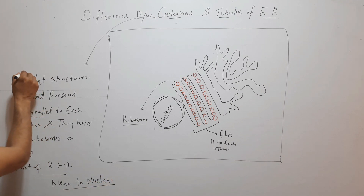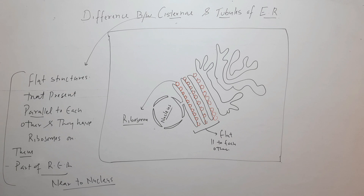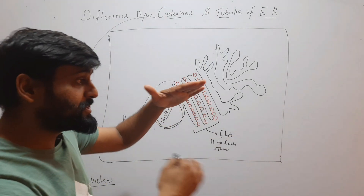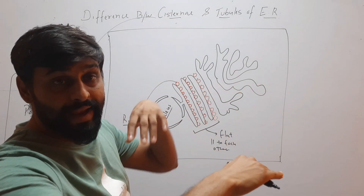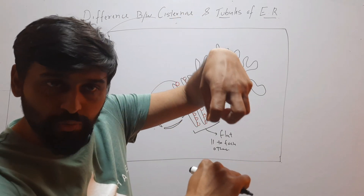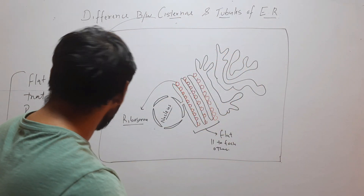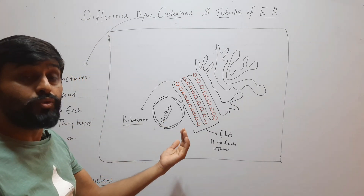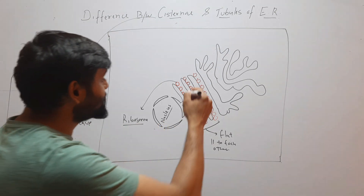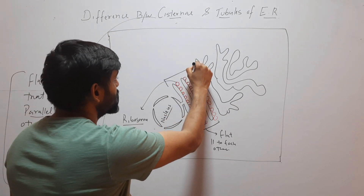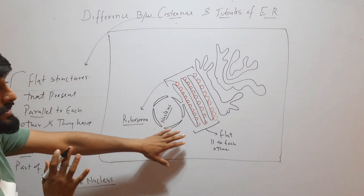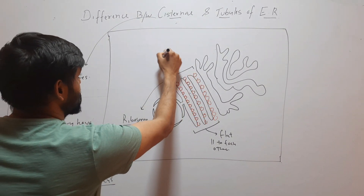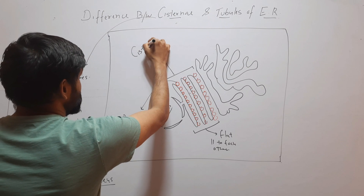These structures are called cisternae. Cisternae are flat structures which are present parallel to each other, and they have ribosomes on them. They are part of rough endoplasmic reticulum because they have ribosomes, and they are present nearer to the nucleus. All these characteristics are present in these structures in this diagram. These structures are called cisternae.